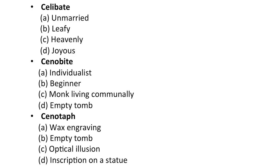Celibate — choices are: unmarried, leafy, heavenly, joyous. You have a word like celebrate which has a different meaning and a different spelling. Next word is cenobite — choices are: individualist, beginner, monk living communally, an empty tomb.